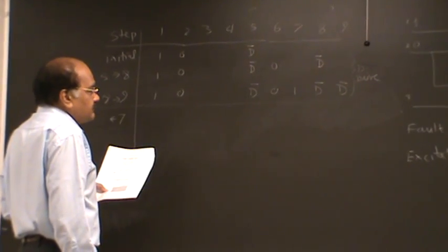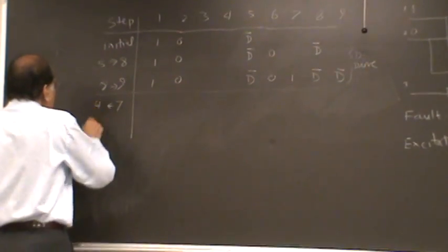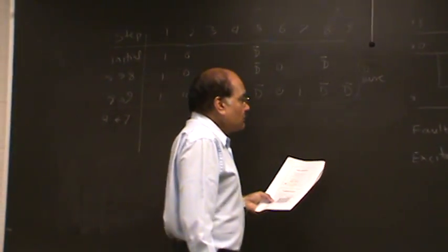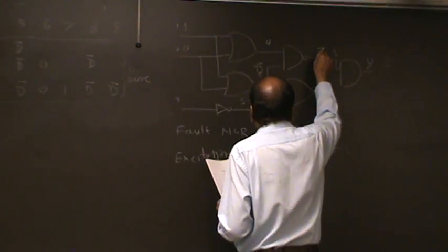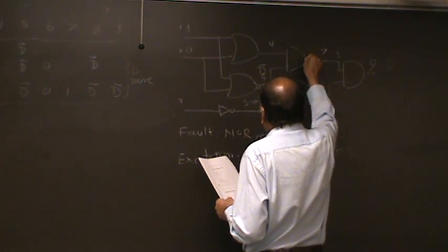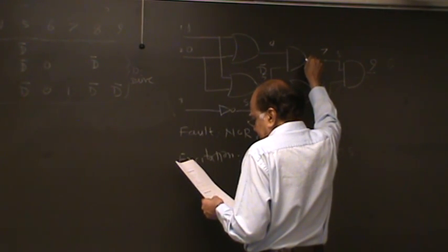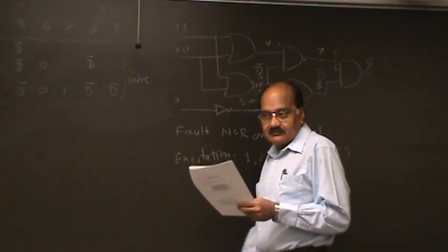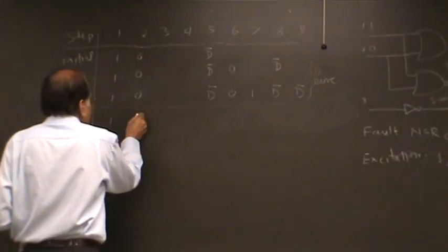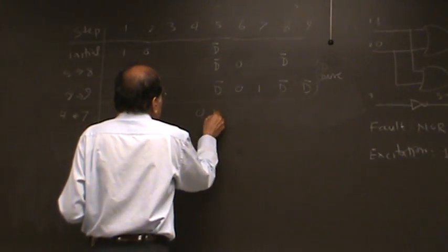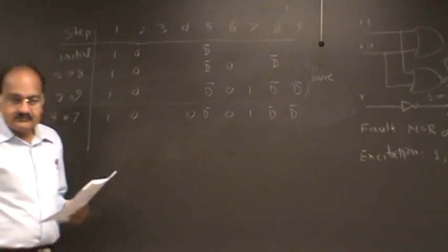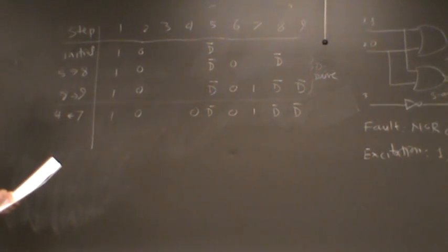Let's justify the value of seven. We have a one there, but can we get a one by putting an appropriate value on line four. So this is a one here. That means we have a zero here. This line is a D bar. So to get a zero, line four has to be a zero.